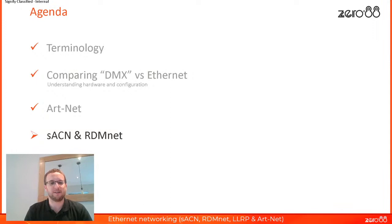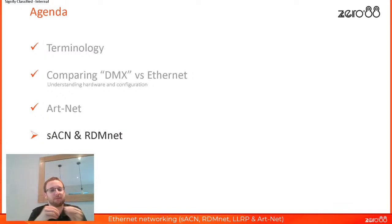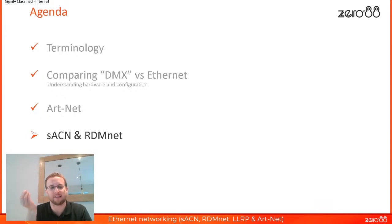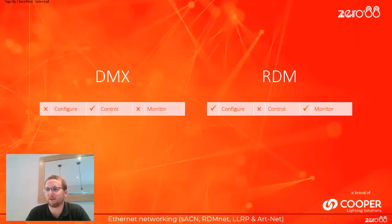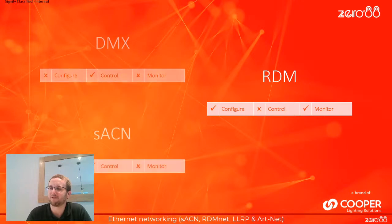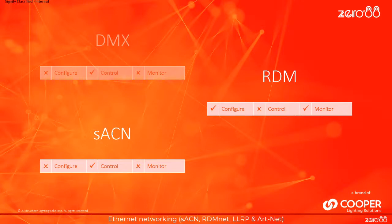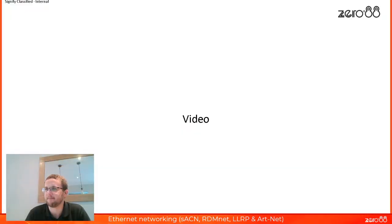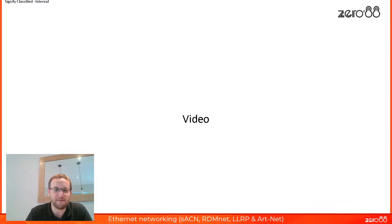Next, we're going to look at Streaming ACN and RDMnet, which are an alternative way of doing on the whole the same job as Artnet. There are differences, but fundamentally their job is to get DMX data from one place to another over Ethernet. As we discussed, DMX and RDM are two separate protocols — Streaming ACN does the equivalent of DMX, so it allows you to control but not configure or monitor your fixtures.